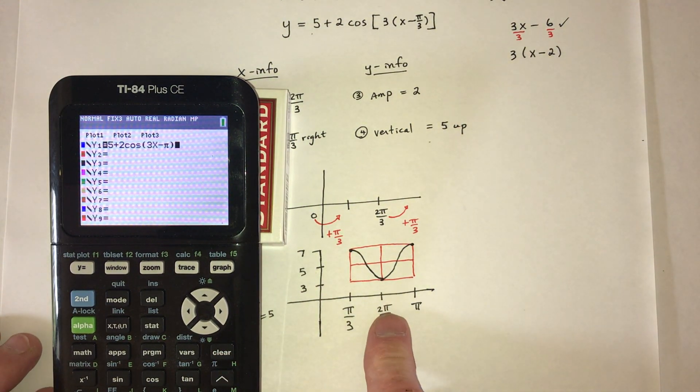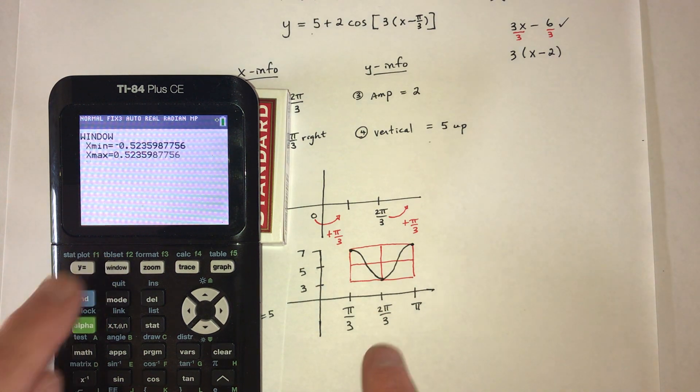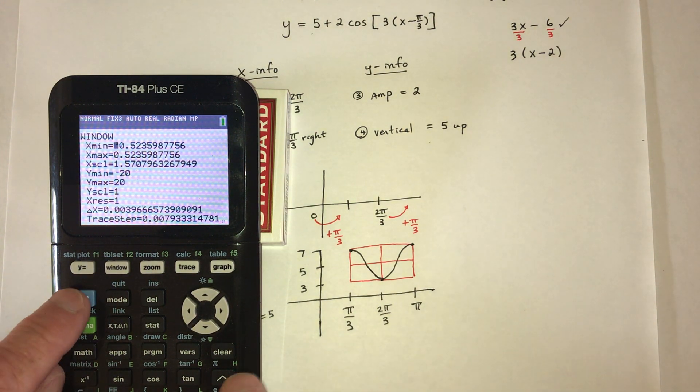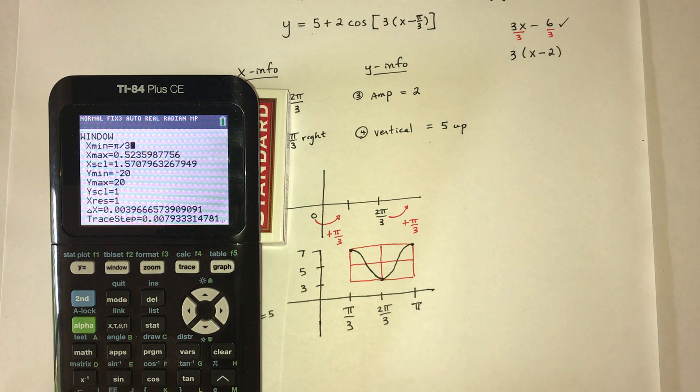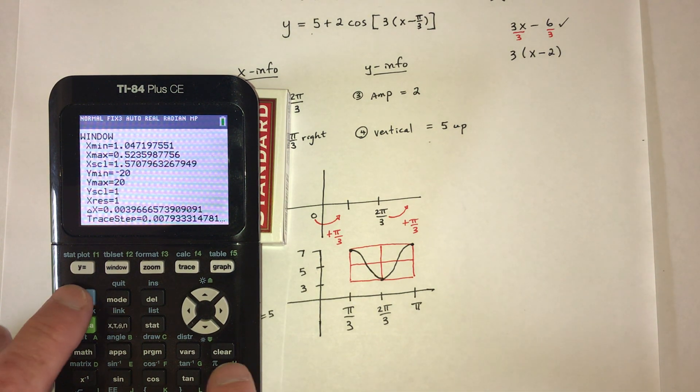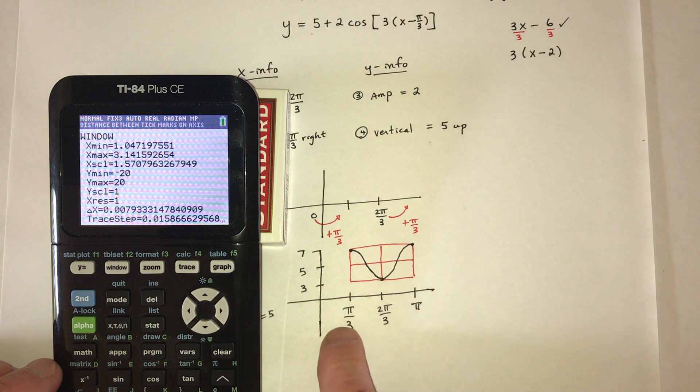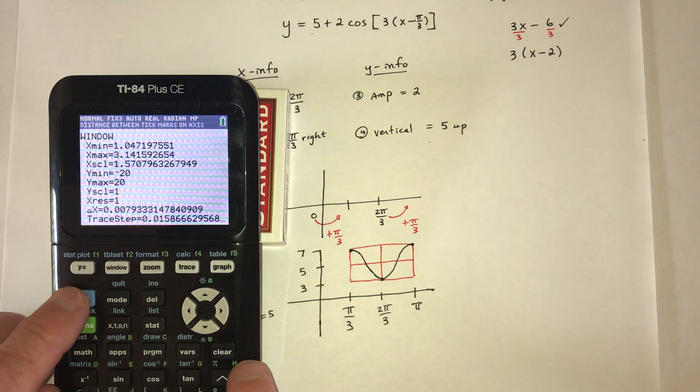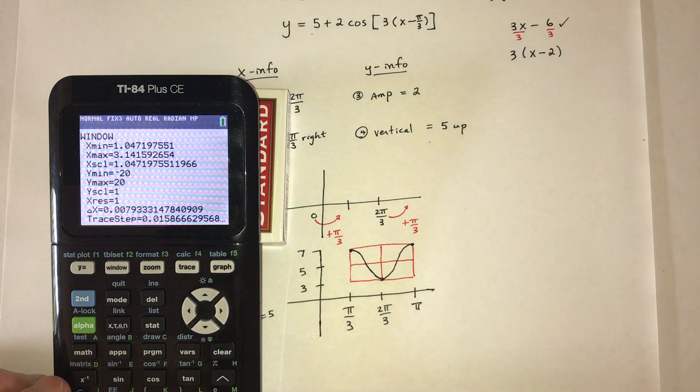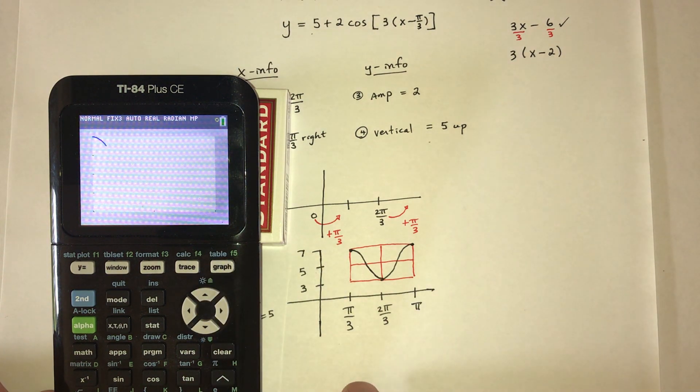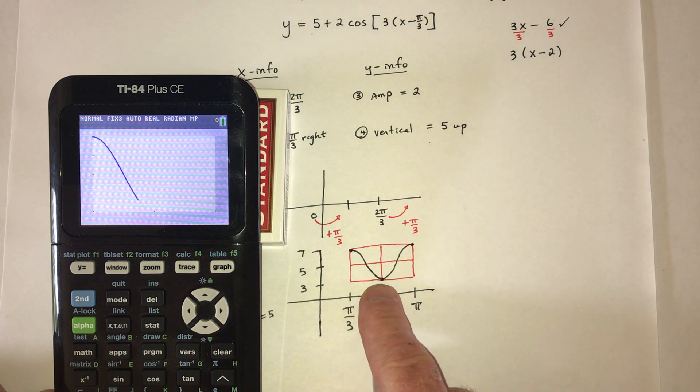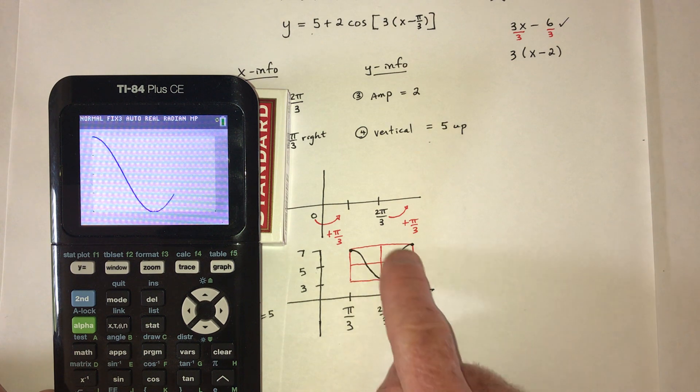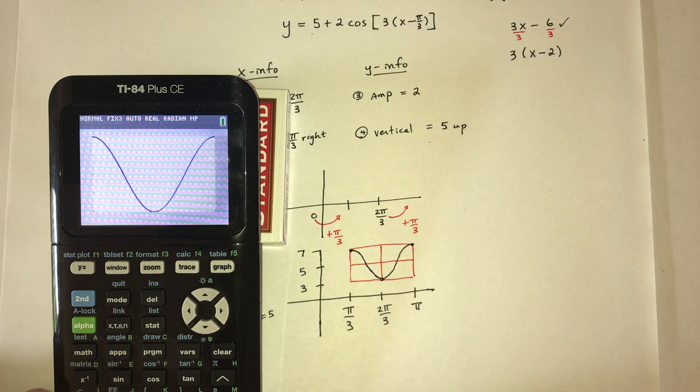And now I need to set up the window to be just like this. Window. So x should go from π over 3 to π. And then these down here are going by π over 3. The y values go from 3 at the bottom to 7 at the top. And then it should graph 1 cosine just like this, because we're looking only in this red window right here. And that did it. Thank you.